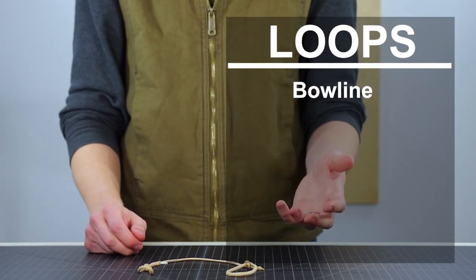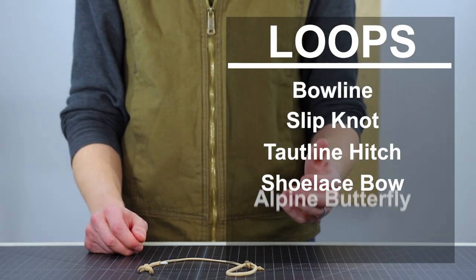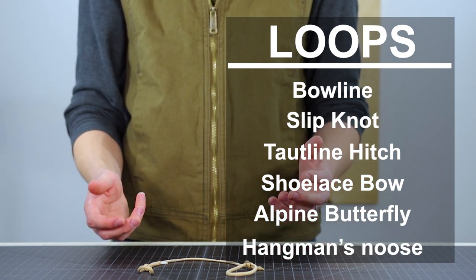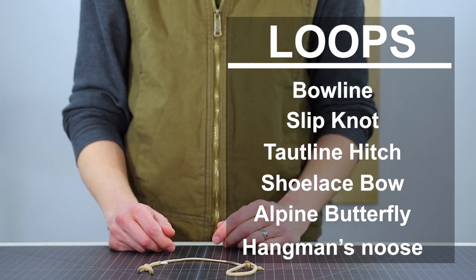Loops are primarily used for utility purposes such as camping, construction, or sailing. They're not generally used in paracord crafting such as making bracelets and things like that.